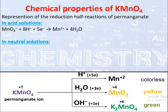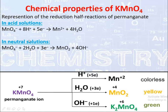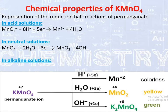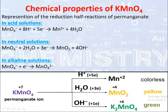In neutral solution, permanganate ion is converted into manganese dioxide MnO2. The +7 oxidation state is reduced to +4, so there is a total addition of 3 electrons; since it is in neutral solution, H2O is used to balance. In alkaline solution, permanganate ion is reduced to manganate ion — +7 oxidation state of manganese is reduced to +6 — so the electron difference is only 1. This half-cell reaction is already balanced.